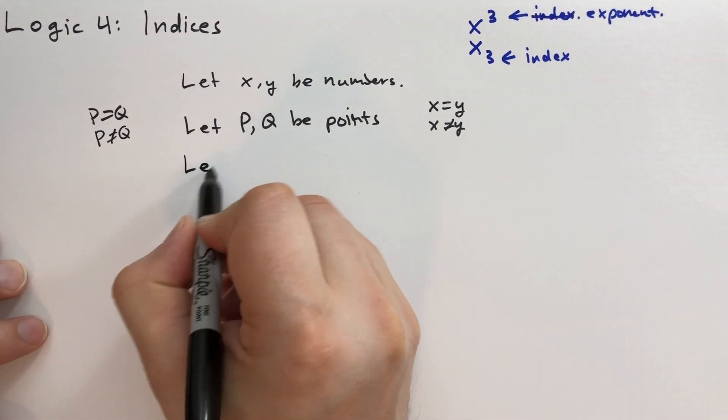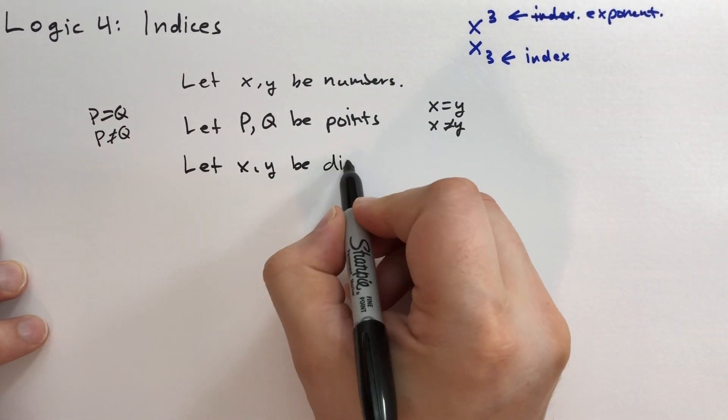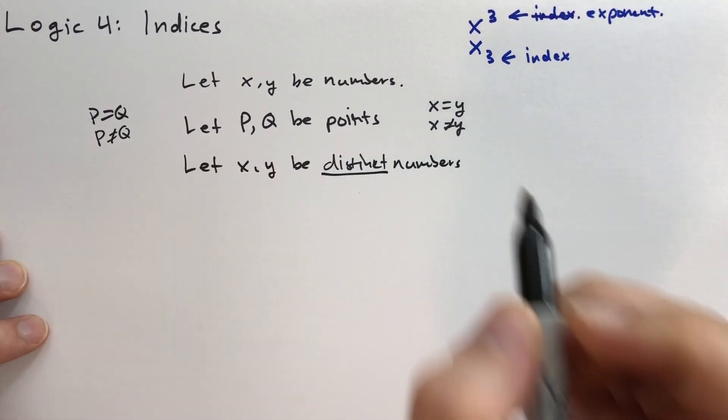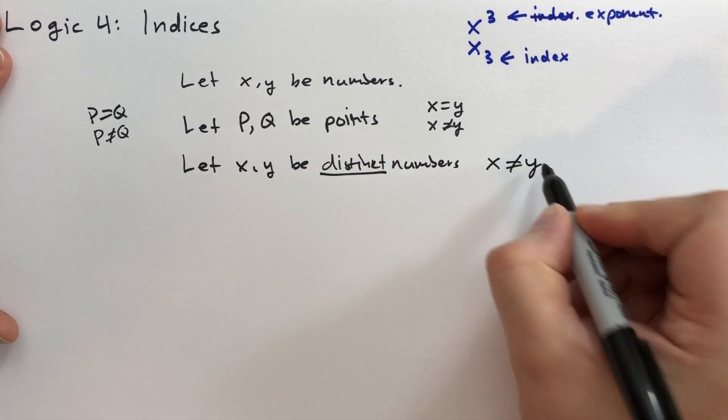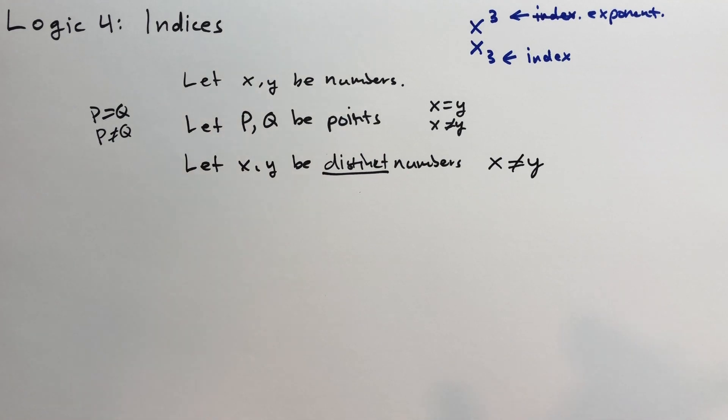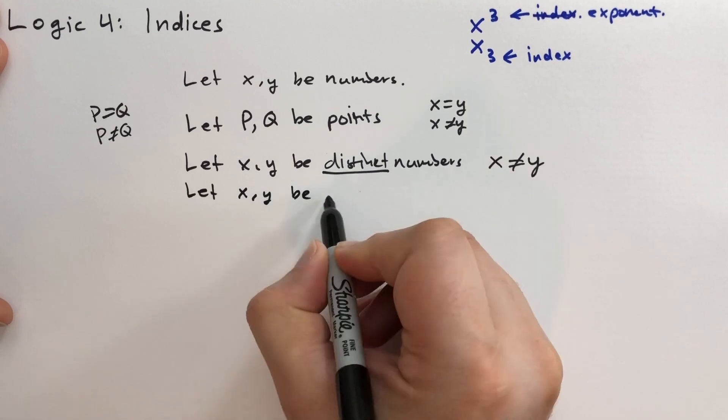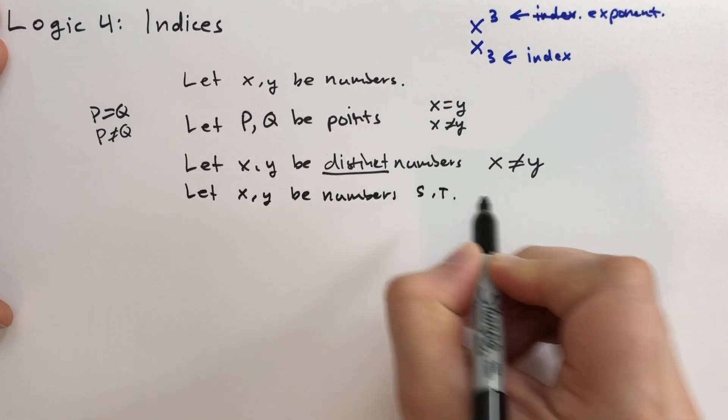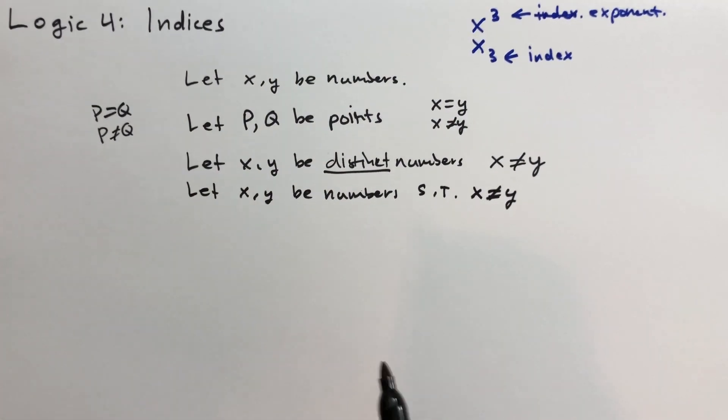However, when we say something like x and y be distinct numbers. There's a good word to know, distinct. This means that x cannot equal y. They have to be different numbers. They can't be the same number. Same for points. So we could restate this as let x and y be numbers such that x doesn't equal y. Same thing for P, Q, be points such that P does not equal Q.